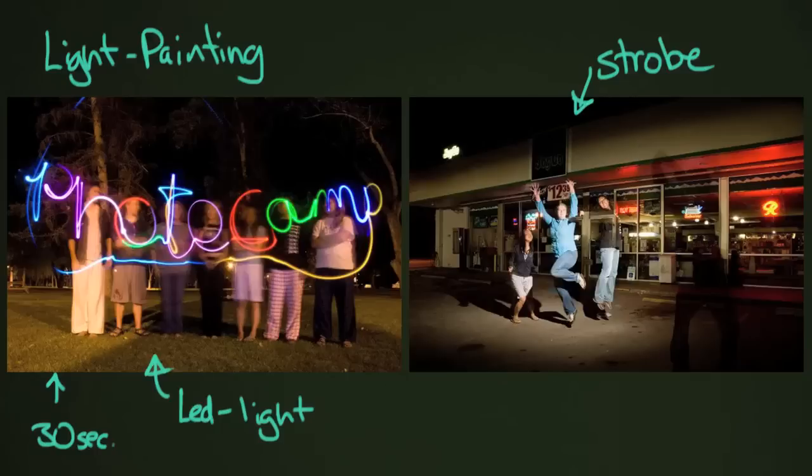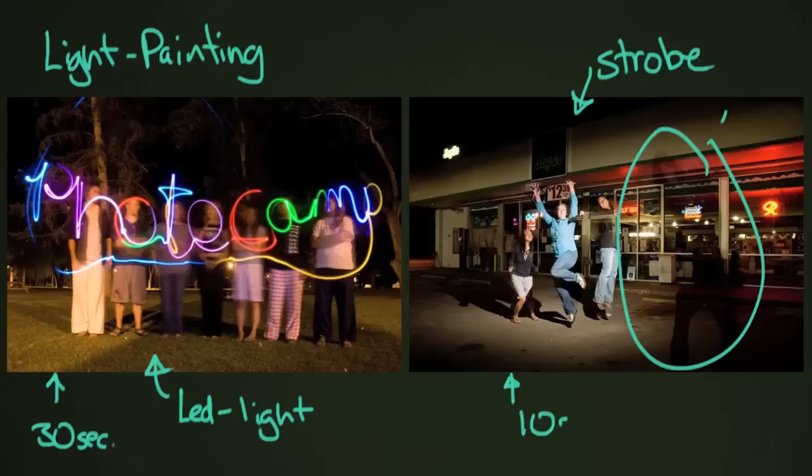And this one to the right, you can see that we just had someone fire a strobe at our friends while they were jumping up in the air. This was actually probably like a 10 second exposure or so. But it doesn't matter because just that one moment where the flash hit them is when you actually see our friends there. So that is a little bit of a roundup of what you can do with low light photography.